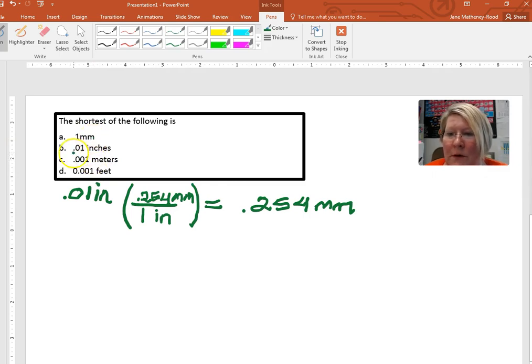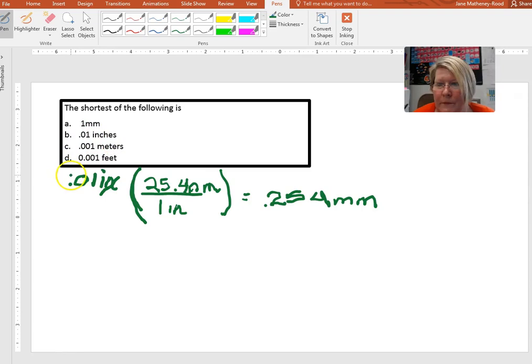So let's start with 0.01 inches. We're going to start with 0.01 inches, this value right here. We look up in a table how many millimeters are in an inch and we find that there are 25.4 millimeters per inch. So 0.01 inches, inches cancel here, is equivalent to 0.254 millimeters.